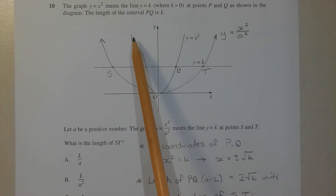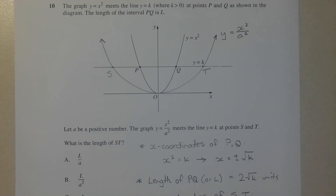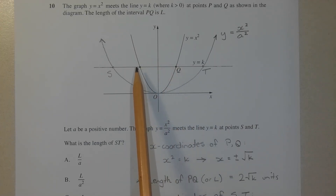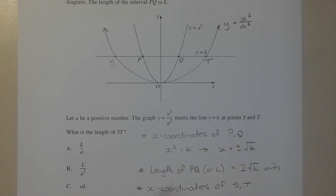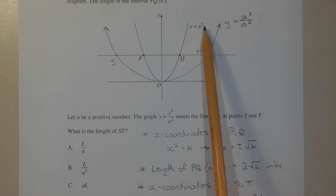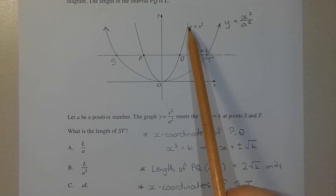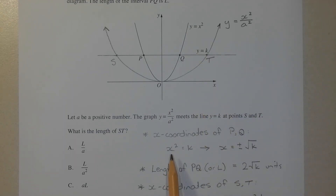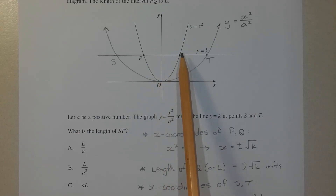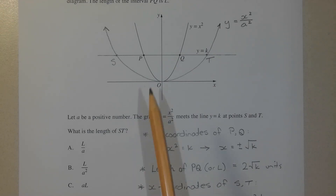It helps to know that the parabola y equals x squared and the parabola y equals x squared over a squared are both even functions. So if we get the x-coordinate of one point, we've found the x-coordinate of the other, which is a reflection in the y-axis. To find the x-coordinates of P and Q, I'll solve simultaneously y equals x squared and y equals k. Substituting, x squared equals k, so x equals plus or minus the square root of k. The distance from the y-axis to either point is √k, so PQ equals √k plus √k, which gives us 2√k units.